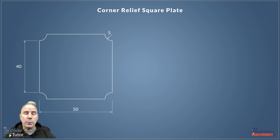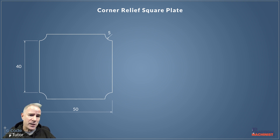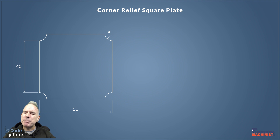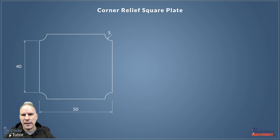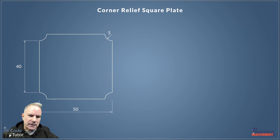Now this is not a full program — I'm not using cutter compensation, I'm not using a lot of things I normally use. This is purely about point-to-point programming so we can learn how to do these sorts of radiuses with G-Code. Let's make a start.